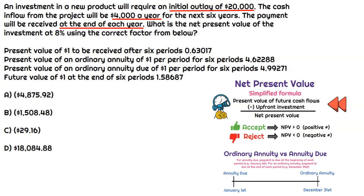So now that we know we're going to receive $4,000 a year at the end of each year, then we know we should choose the present value of an ordinary annuity of $1 per period for six periods. That is what we need, right? And that is 4.62288.